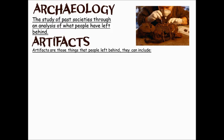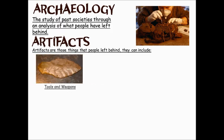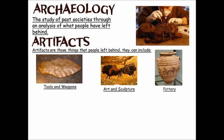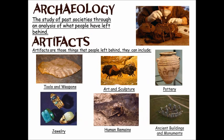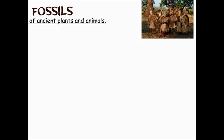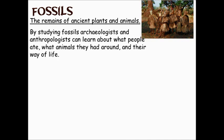Artifacts are those things that people leave behind, and they can include tools, weapons, art and sculpture, pottery, jewelry, human remains, ancient buildings, and monuments — all of these things could be studied by archaeologists. Fossils — human remains, or animal or plant fossils — are also studied by archaeologists and anthropologists. We can learn a lot from those, like what people ate, what animals they had around, and their way of life.